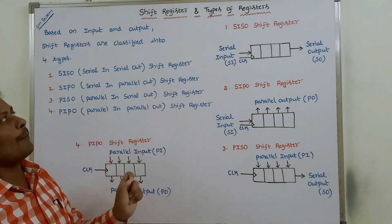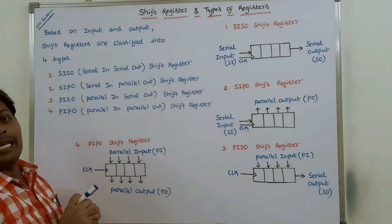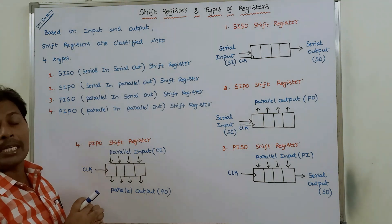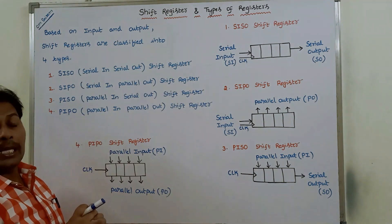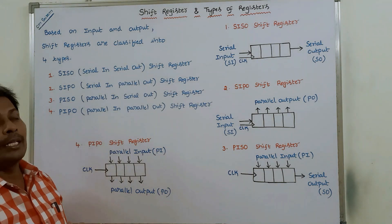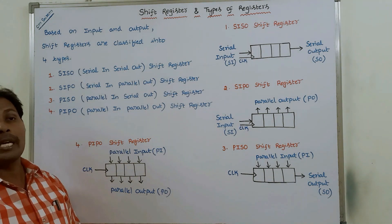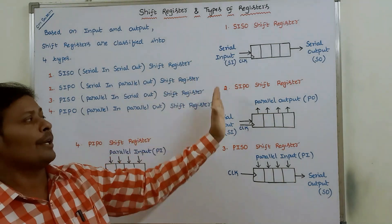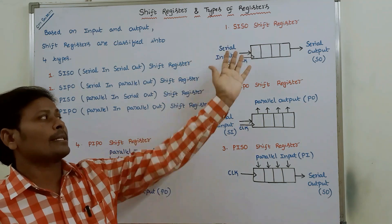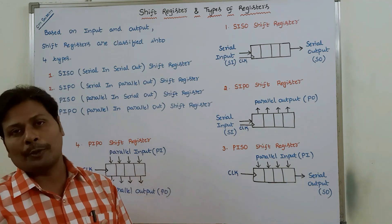This was the description about what is a shift register, shift-left register, shift-right register, bidirectional shift register, universal shift register, and the types of shift registers with diagrammatic representation. In the next video, we will discuss each and every shift register — how data is transferred using SISO, SIPO, PISO, and PIPO — in future videos.